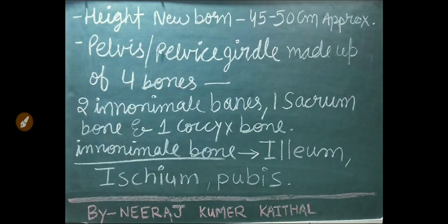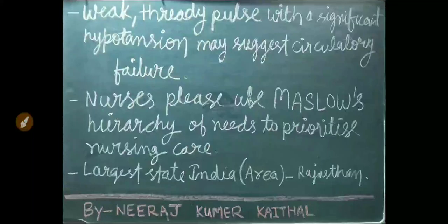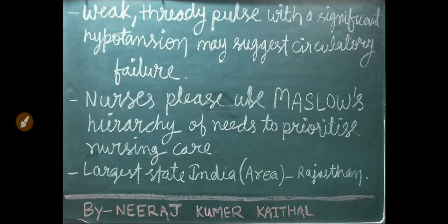Height of a newborn baby is 45 to 50 centimeters. The bony pelvis or pelvic girdle is made up of four bones: two innominate bones, one sacrum bone, and one coccyx bone. Each innominate bone is made up of ilium, ischium, and pubis. A weak, thready pulse with significant hypotension may suggest circulatory failure.